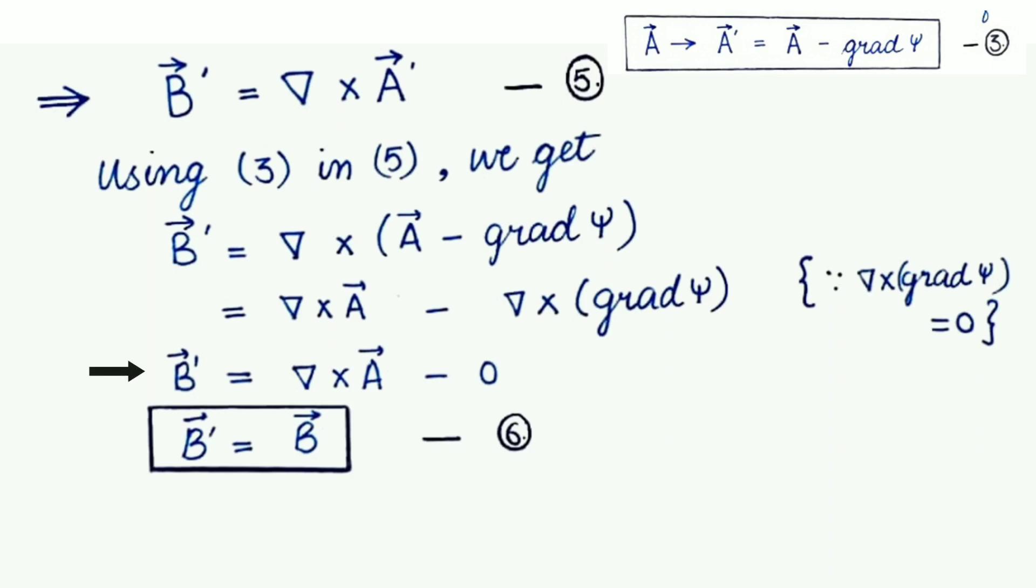that is del cross grad psi gives us zero. So, finally, we will get only del cross A as a result and we know that from equation 1, that it is equals to B. So, from here, B dash is equals to B. Mark it as equation sixth.